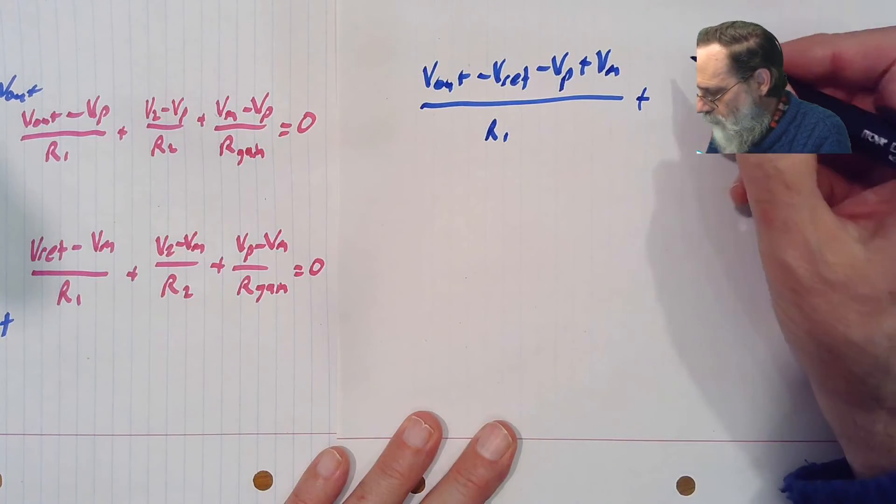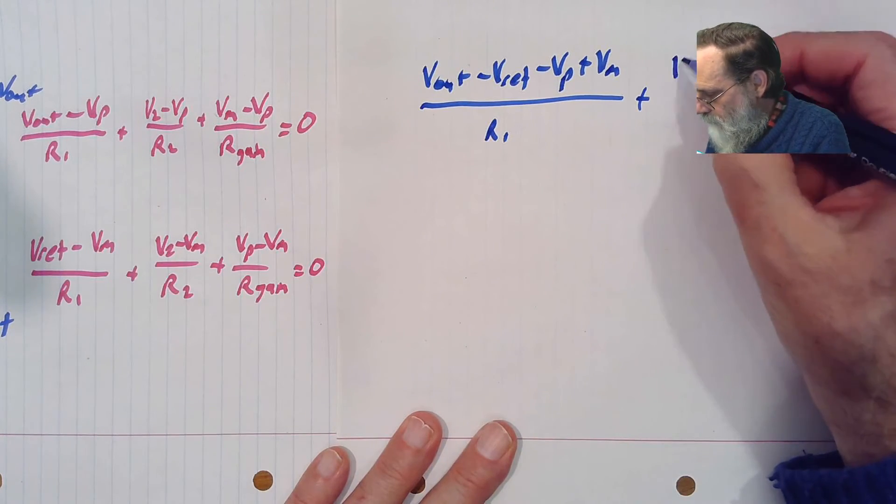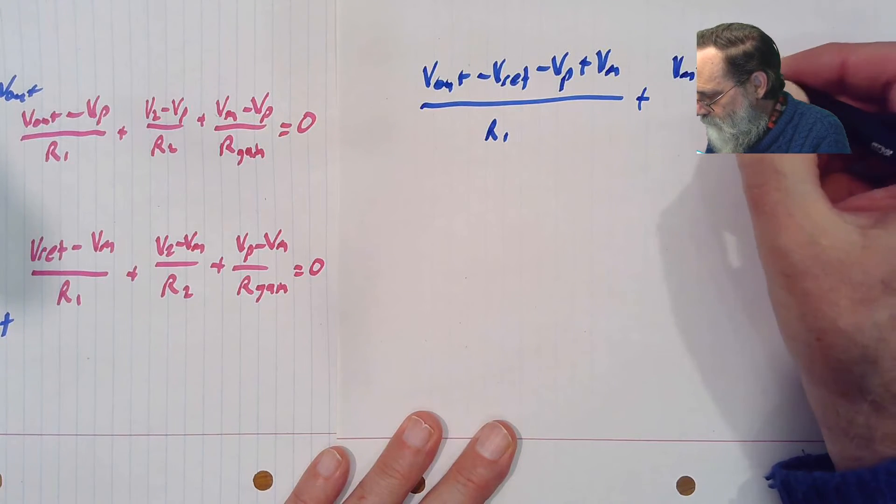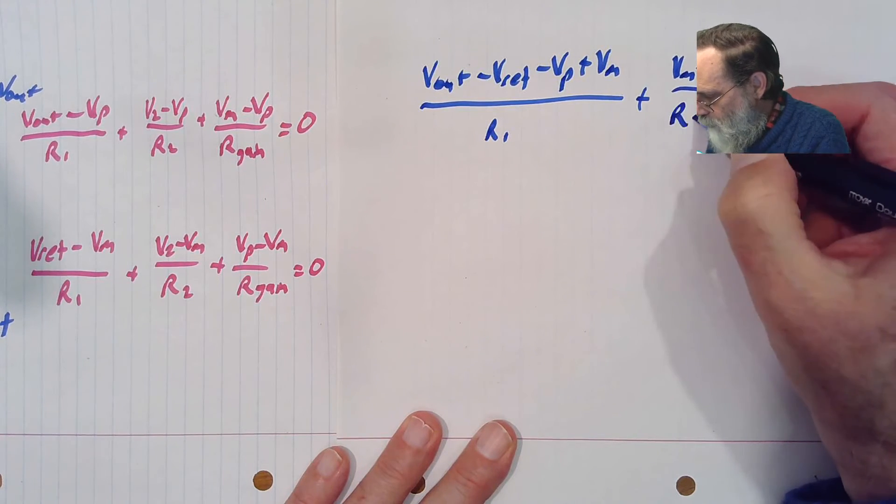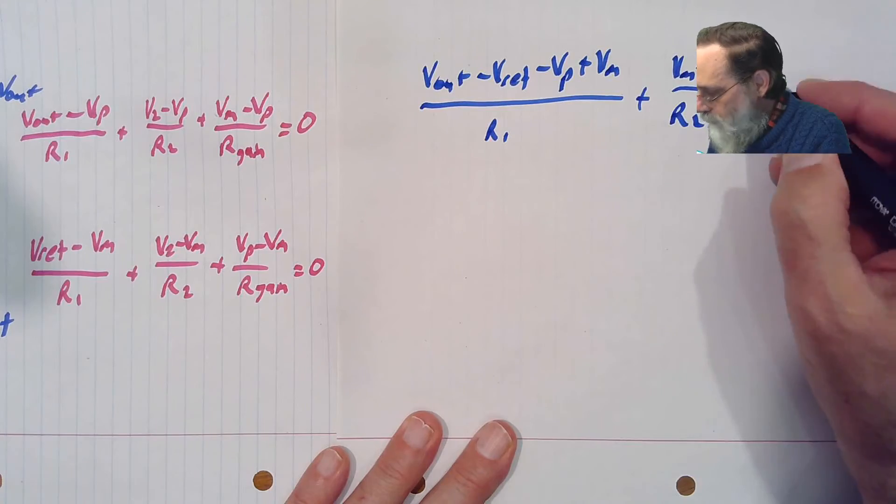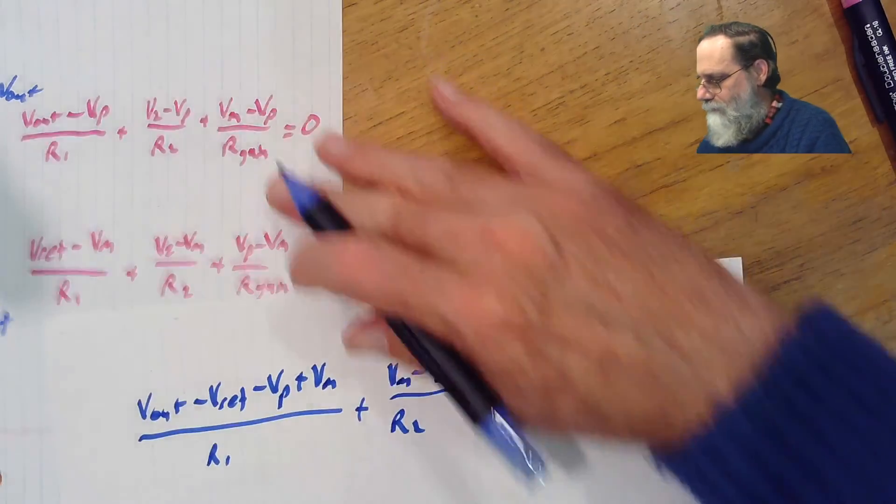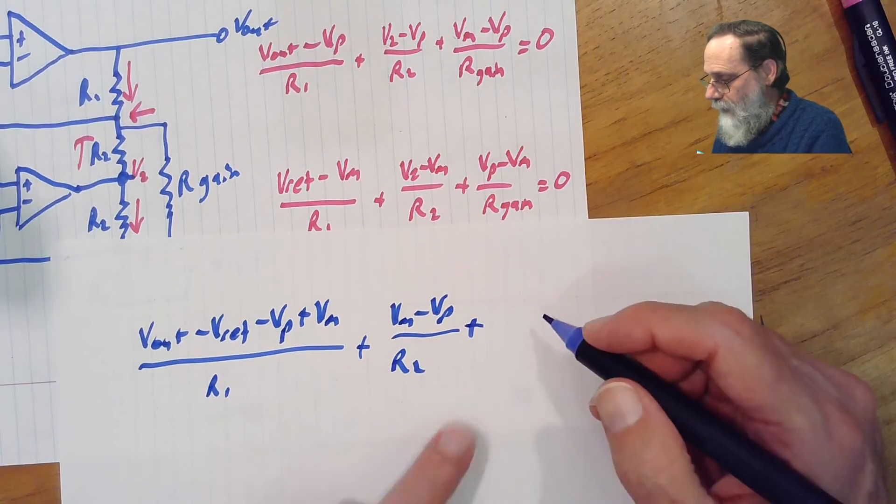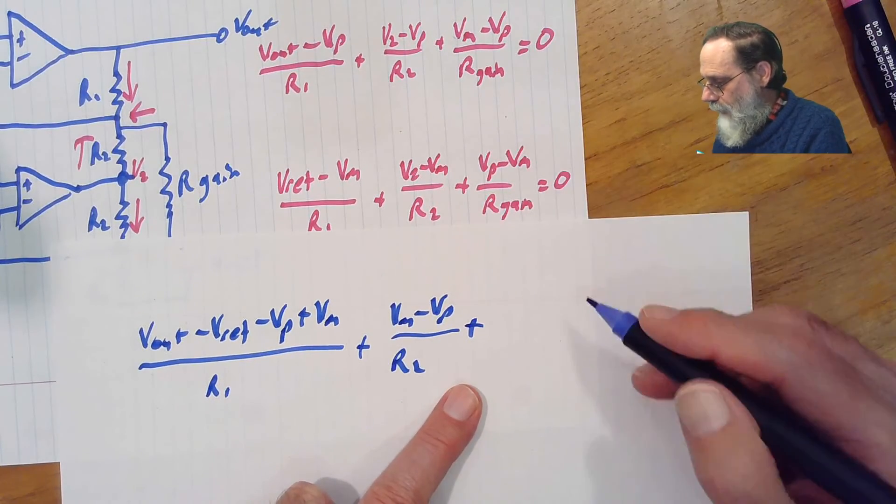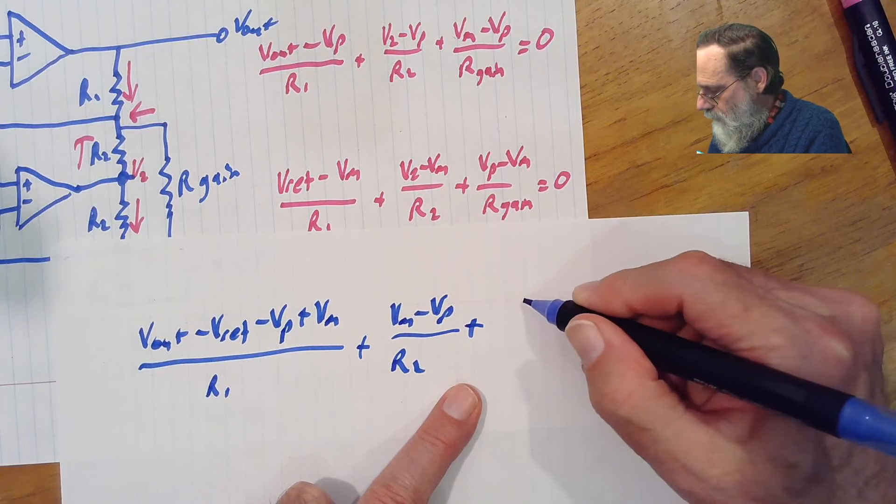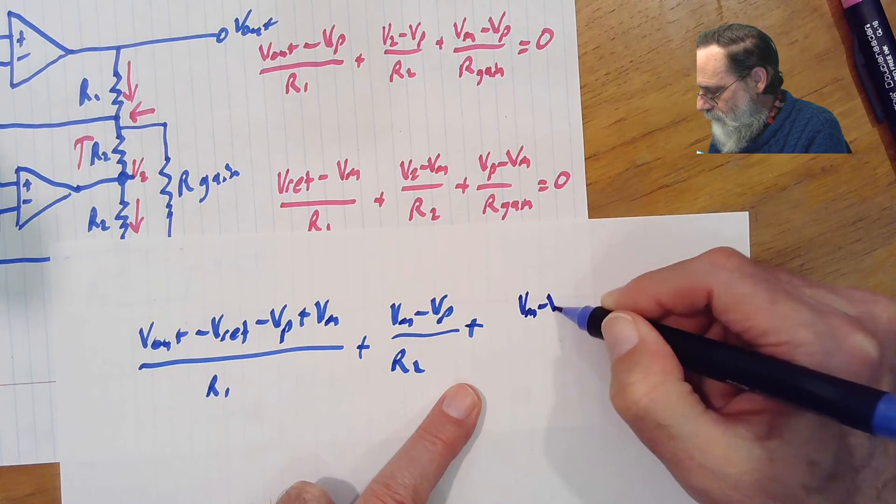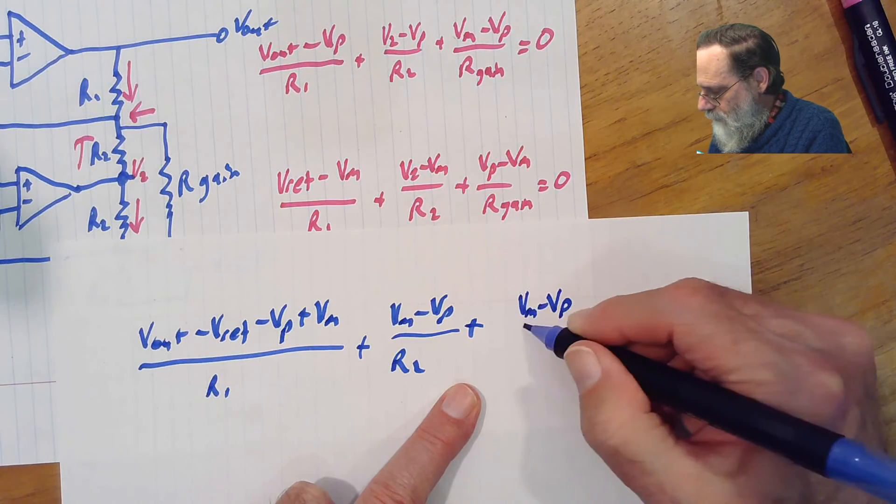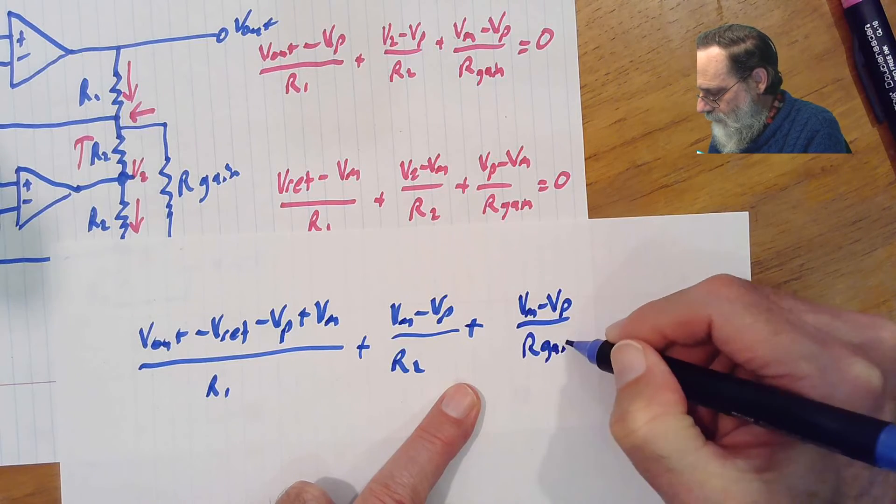the v2 minus v2 cancels, so I'll end up with vm minus vp over r2 plus, all right, try doing it a little bit differently. And then the last one,